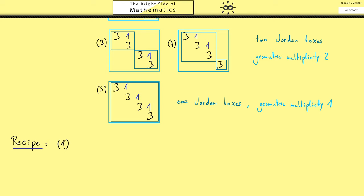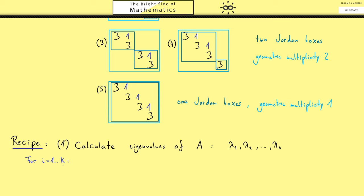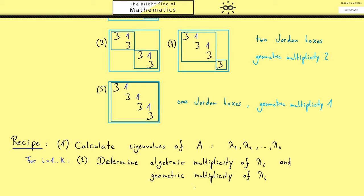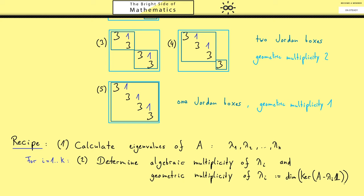So the first step — you already know this — you have to calculate all the eigenvalues, let's call them lambda with index 1, 2 and so on. We say they are all different and we have k of them. The Jordan blocks are independent, so you can start with any of them. However in the end you have to do it for all of them. The next steps you do for all eigenvalues separately. You look how often lambda i occurs as a zero in the characteristic polynomial. Then you calculate the geometric multiplicity of lambda i, which is nothing more than calculating the kernel of the matrix A minus lambda i times the identity matrix. The dimension of this kernel — the eigenspace — is exactly the geometric multiplicity.